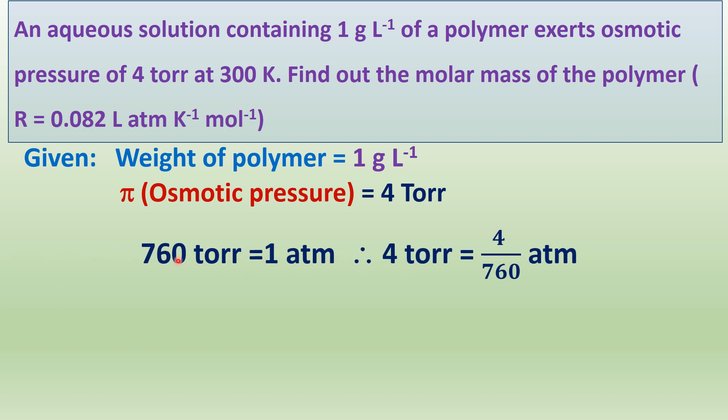We know that 760 torr equals 1 atmosphere. Therefore, 4 torr equals 4 divided by 760 atmosphere.